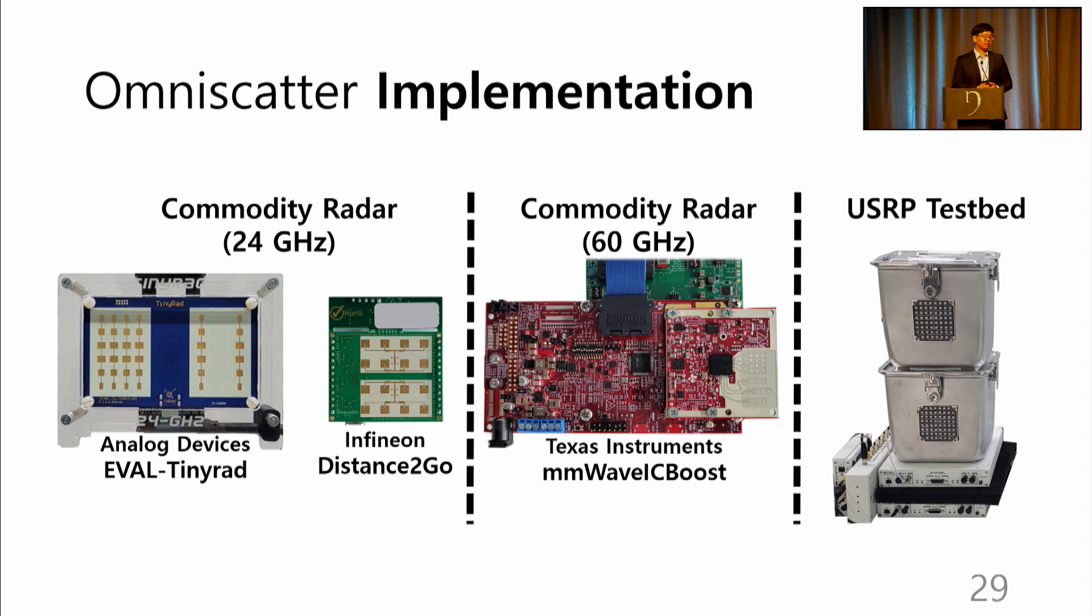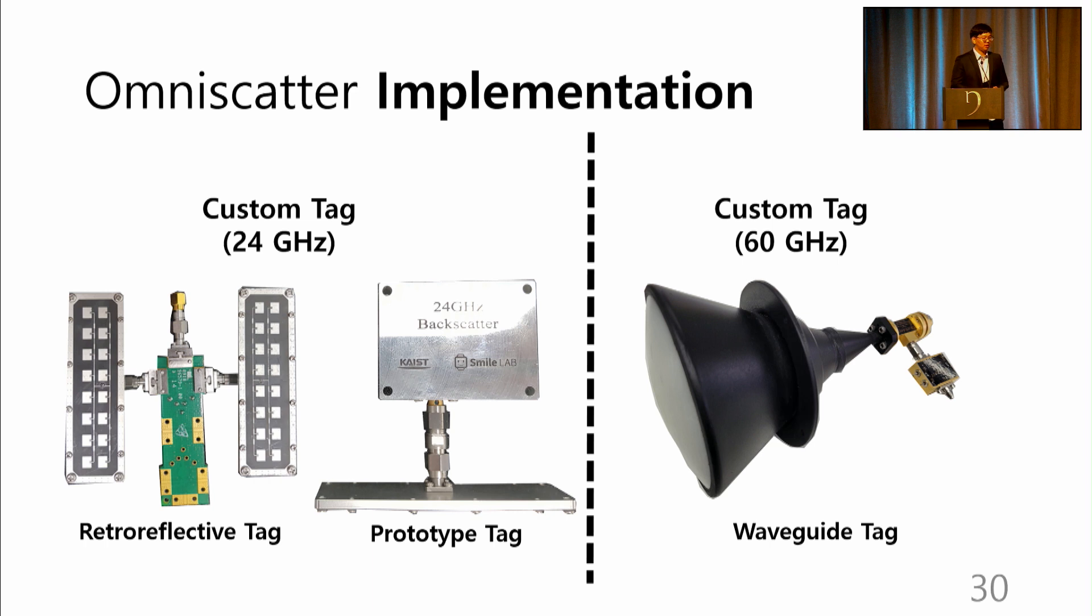Omniscatter is implemented and verified at 24 GHz and 60 GHz commodity radars, along with a custom USRP radar. Furthermore, we built custom tags for Omniscatter. This includes retro-reflective tags built on the Van Atta array, as well as a prototype tag with 20 dB isolation difference between the tag states.